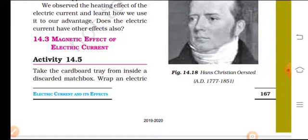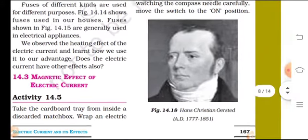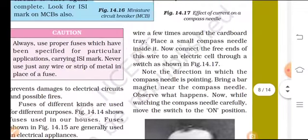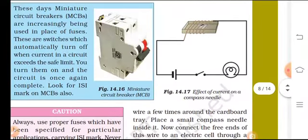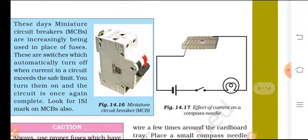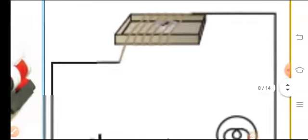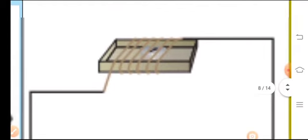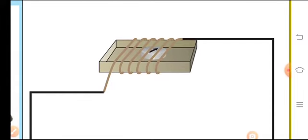In this activity, take the cardboard tray from inside a discarded matchbox. Wrap it with electric wire from all sides, as you can see in the picture. The wire is wrapped around the matchstick cardboard.